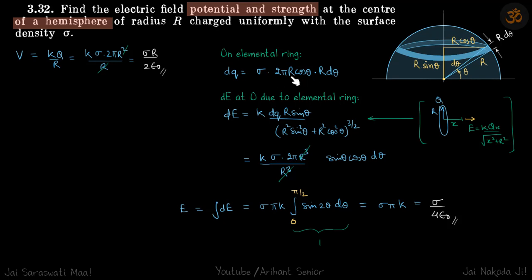A small charge dQ on the ring is sigma times the small area. The small area, if you open this ring, is the perimeter times the width. Perimeter is 2π R cos θ and width of the ring is R dθ.